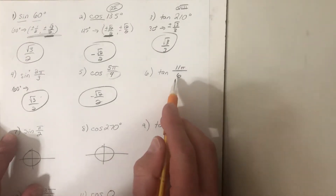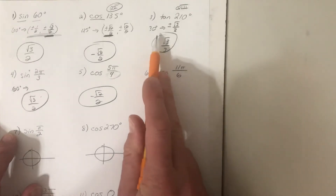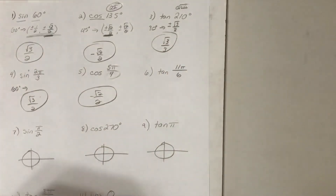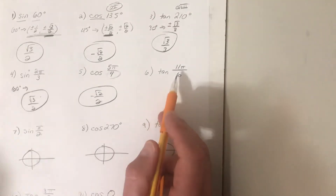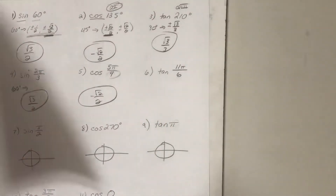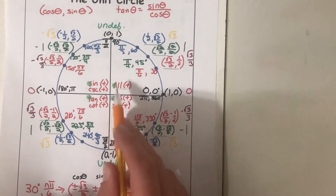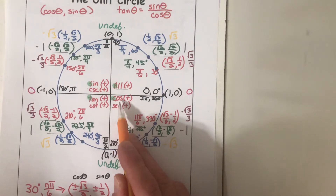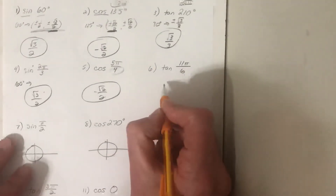For the tangent of 11π/6, that is a 30-degree reference angle, so the value of tangent is either positive or negative root three over three. 11π/6 is located in quadrant four. Using ASTC, only cosine and secant are positive in quadrant four, so tangent is negative. Our answer is negative root three over three.